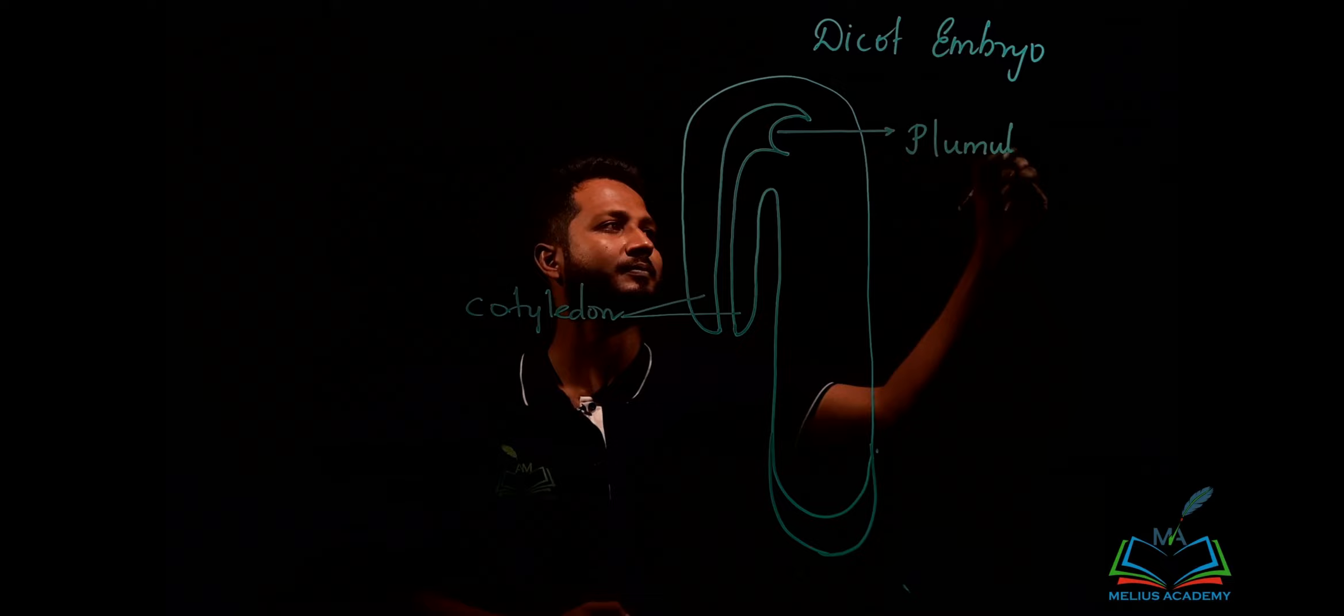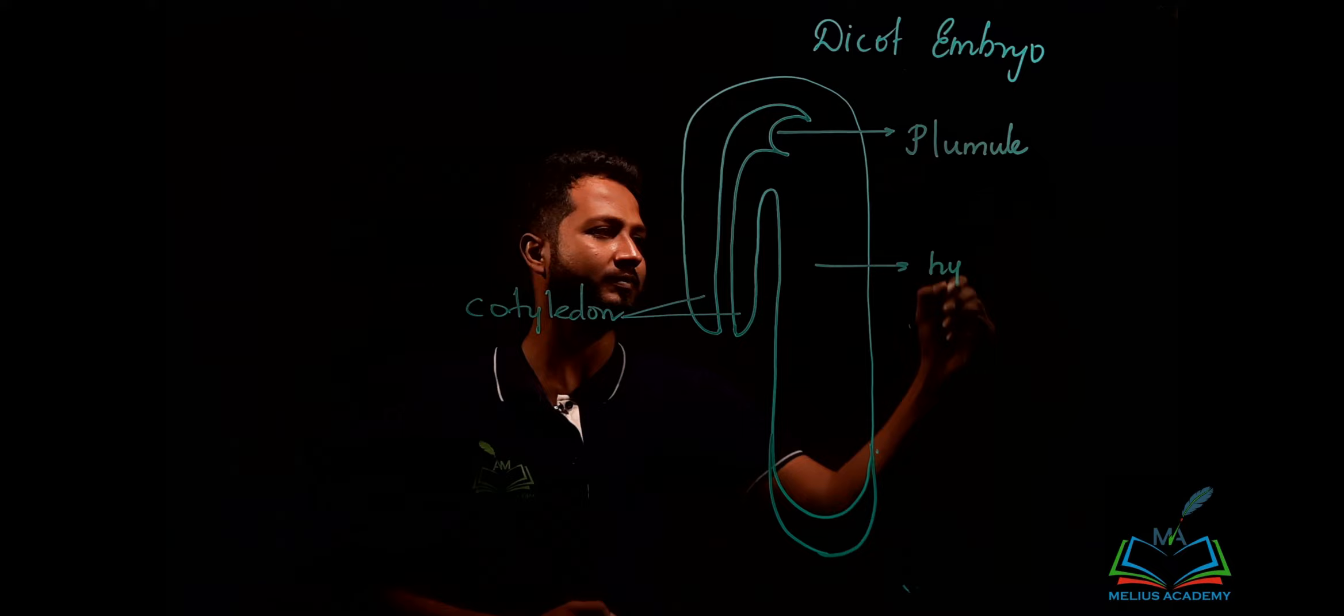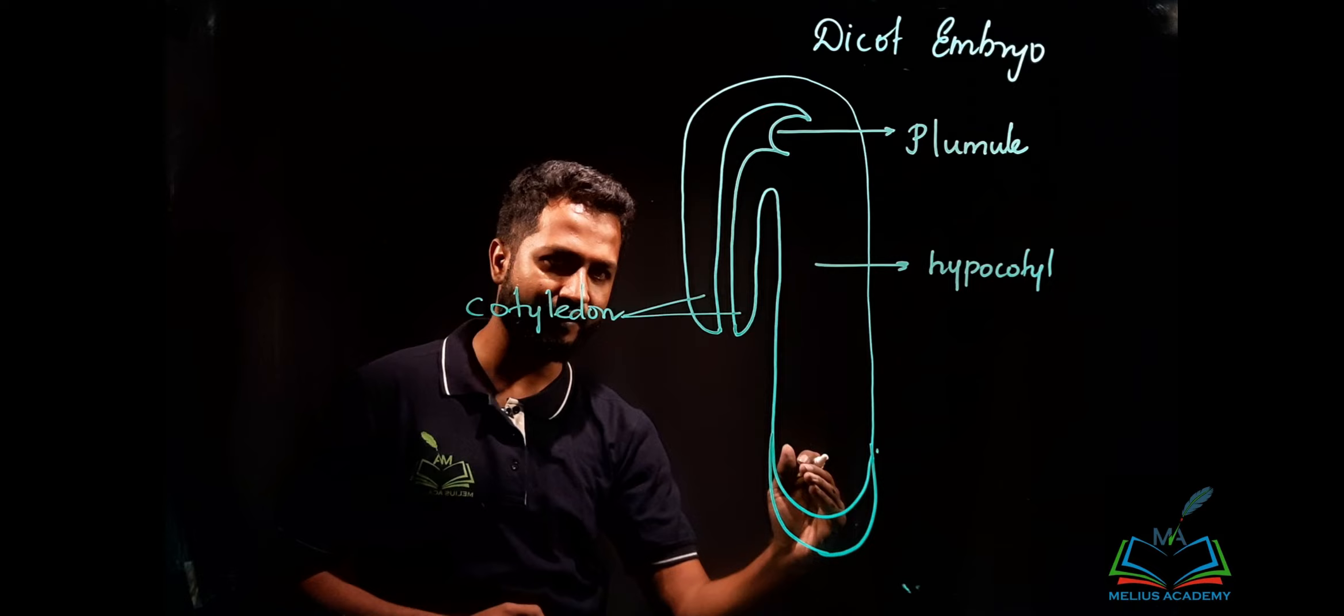Below the epicotyl, this region is known as the hypocotyl. The hypocotyl will further give rise to root-developing tissue called the radicle.